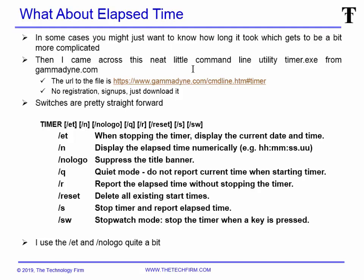I came across a neat little command line utility called timer.exe. For those who can't install anything on their machine, you'll need to find out if it'll get blocked or if you need to get whitelisted. It's not built into Windows. It's available at gamma-dyne.com under the command-line htm page. There's no registration, no signups, no nag screens — just download it. It's quite nice and the switches are pretty straightforward.